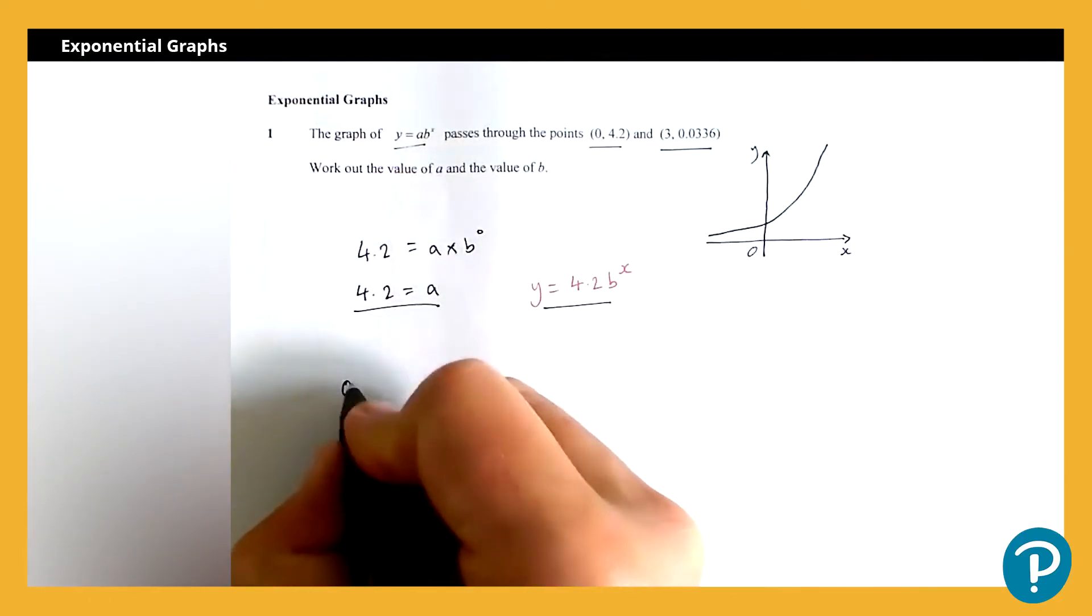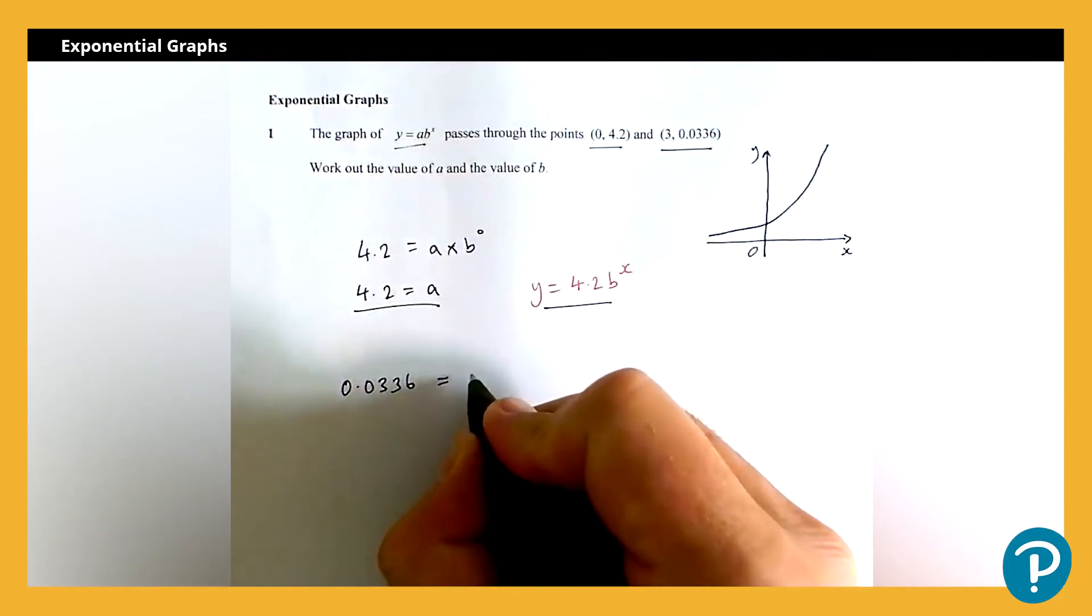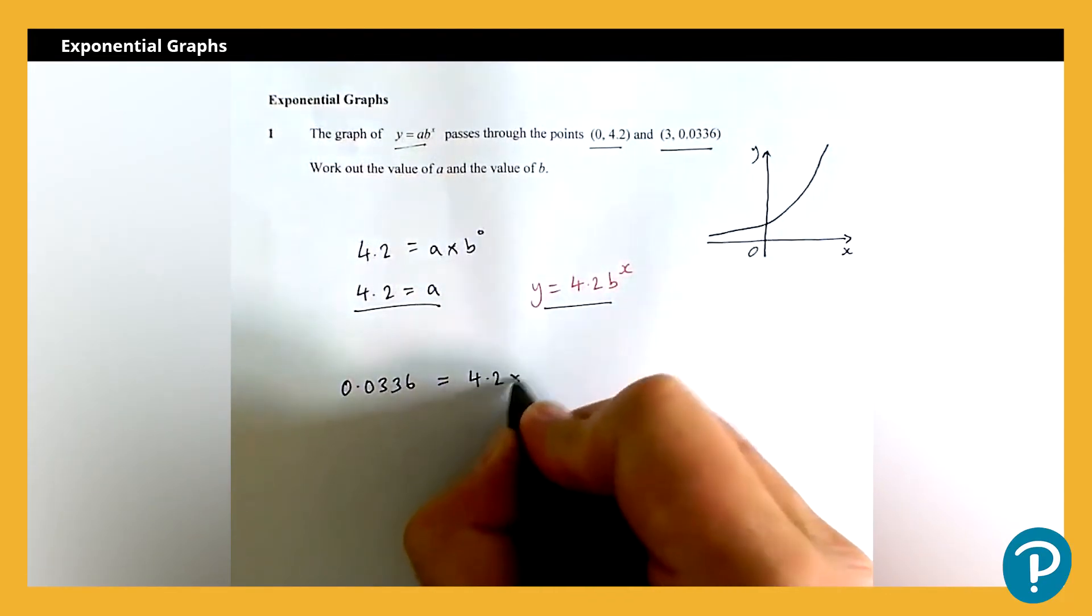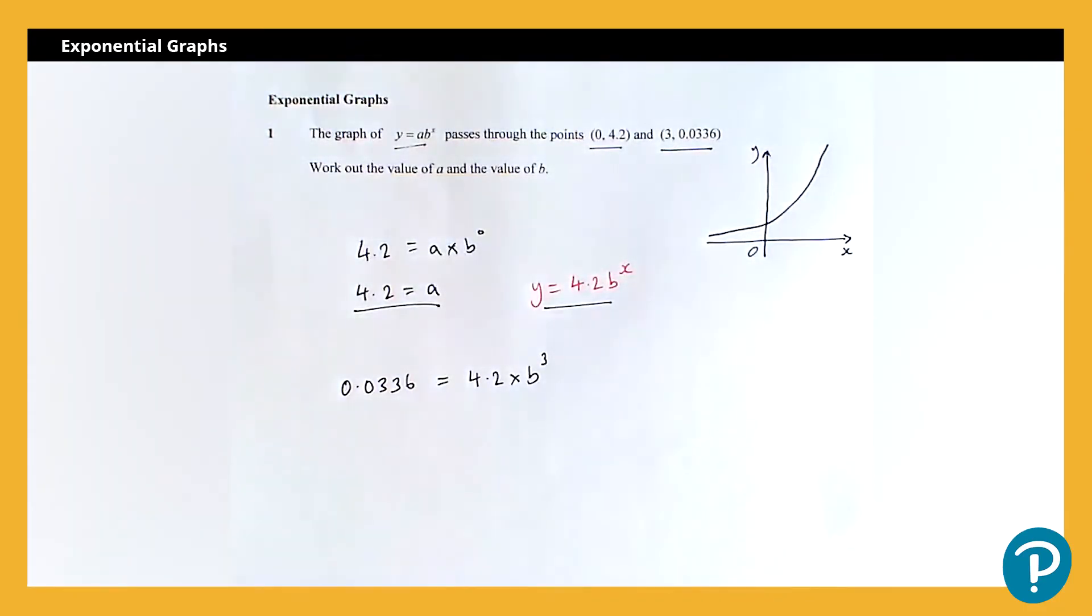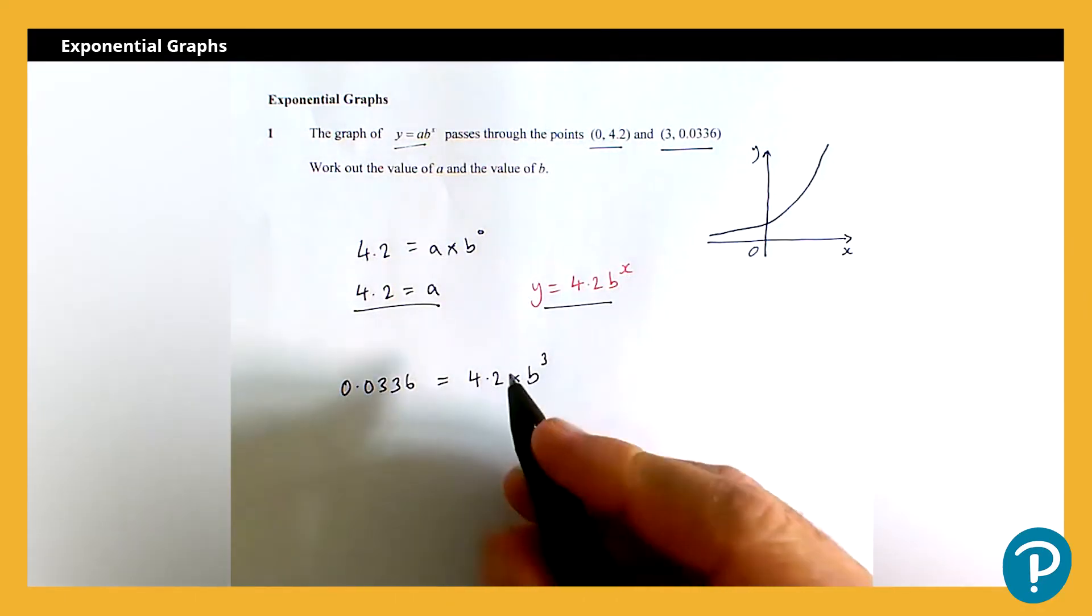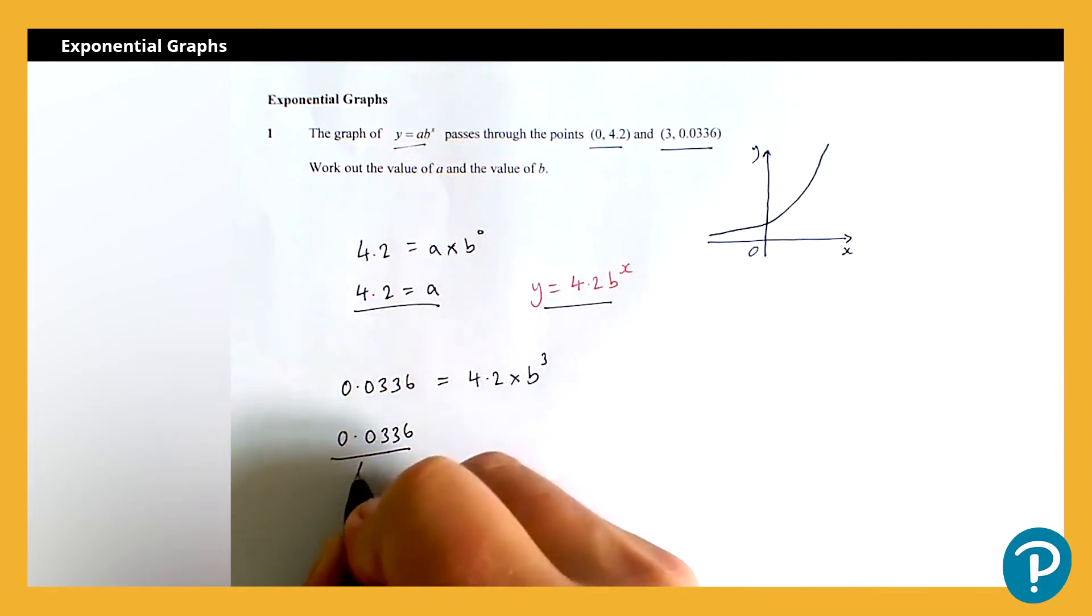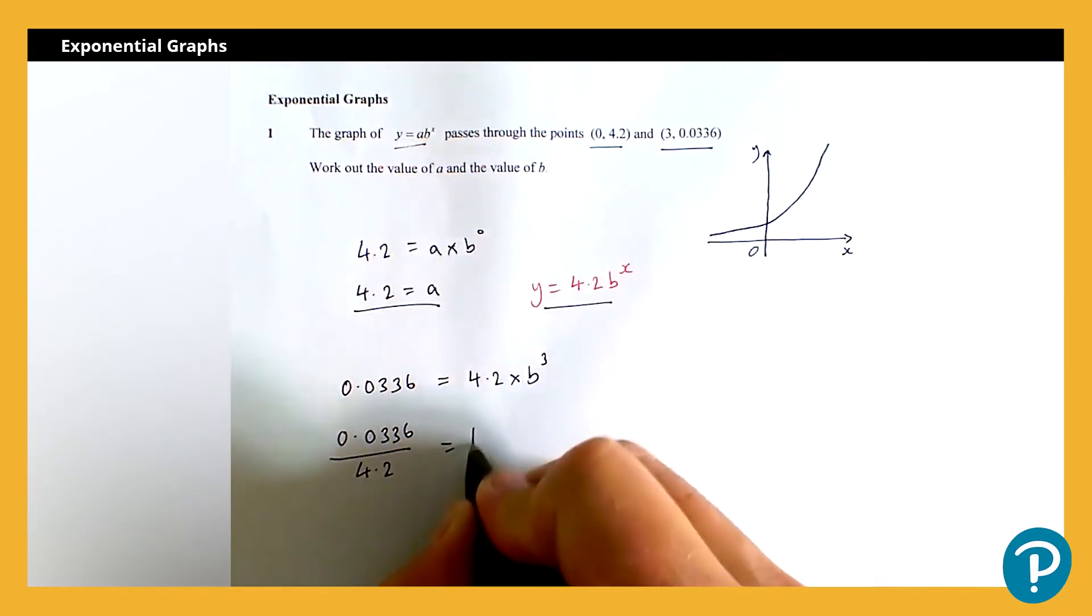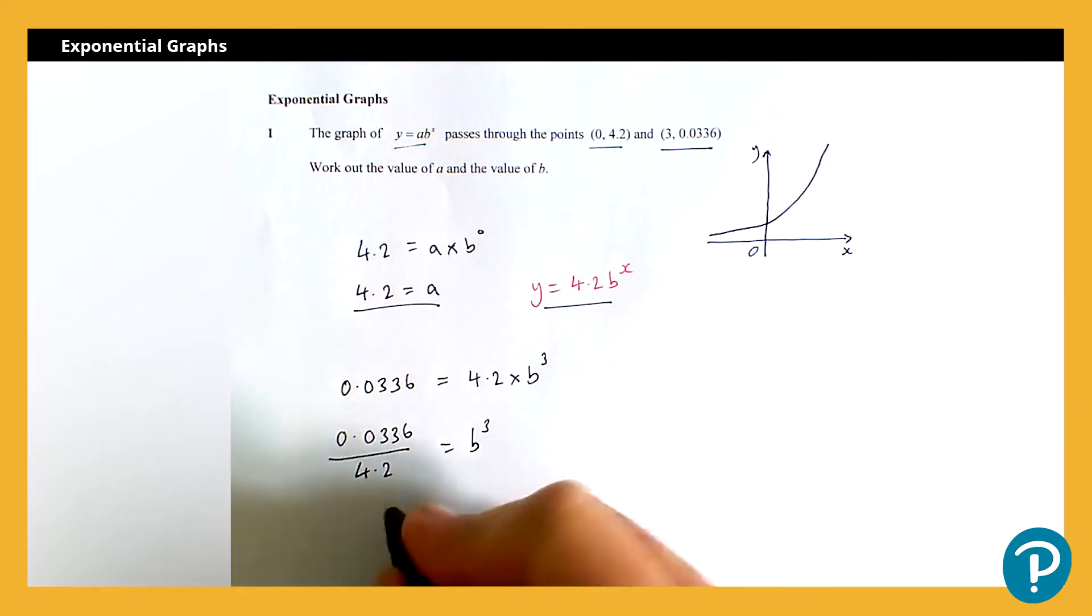So 0.0336 is equal to 4.2 multiplied by b to the power 3. Now I want to work out the value of b, so the first thing I'm going to do here is divide. So 0.0336 divided by 4.2 is going to give me the value of b cubed, and then to find the value of b I'm going to find the cube root.